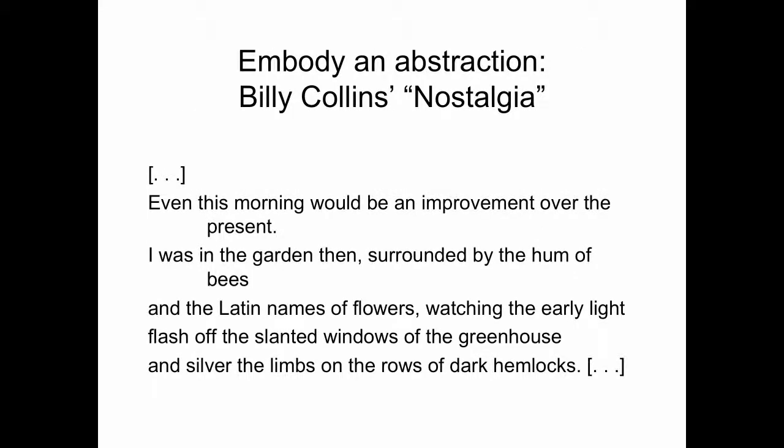Imagery can embody an abstraction. An abstraction is a big, complex idea that is hard to wrap a definition around—like patriotism, love, or sorrow. These are things that are really good to avoid in a poem because they mean so many different things to so many different people that seeing them doesn't really bring the reader into any particular kind of world. It brings them into their world but not the world of the poem, which as a writer is what your goal is.